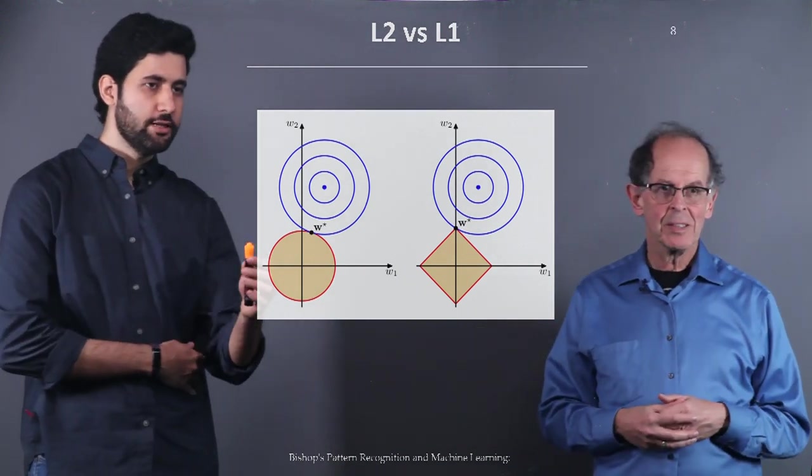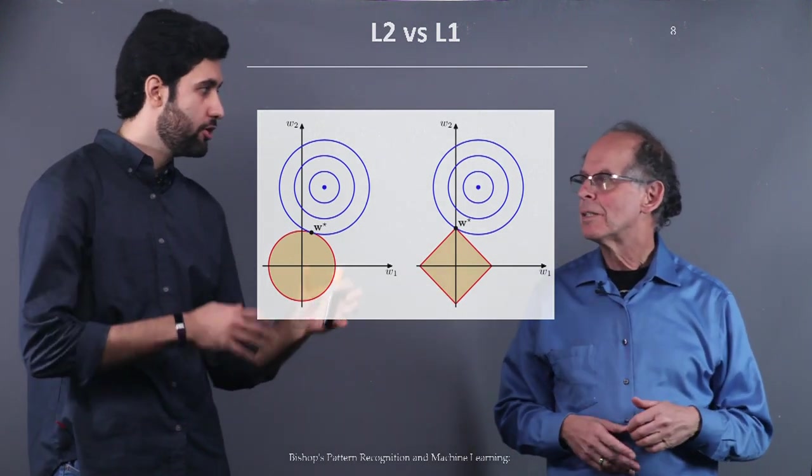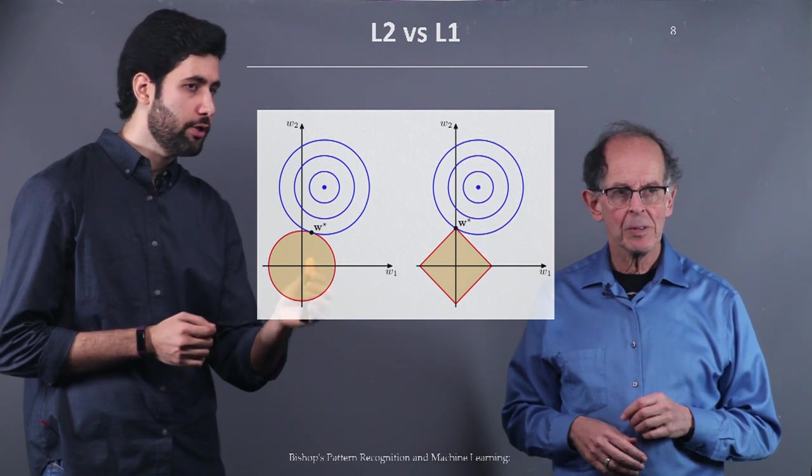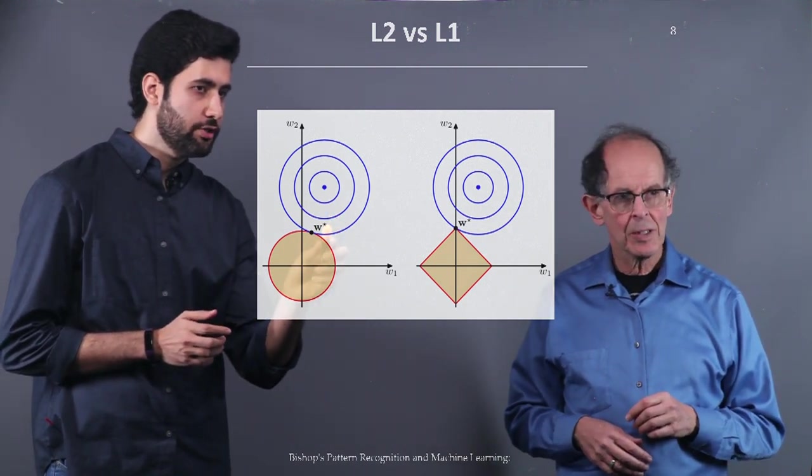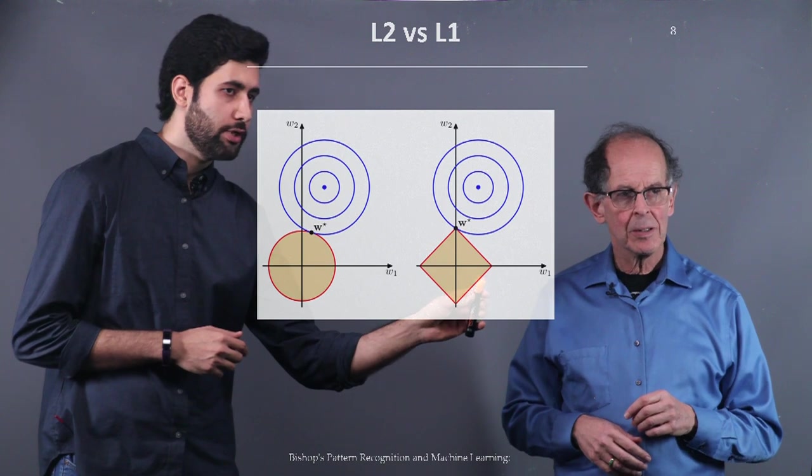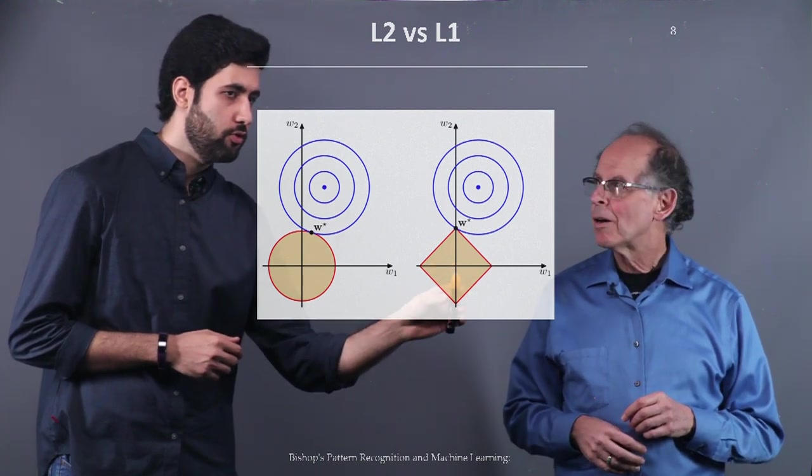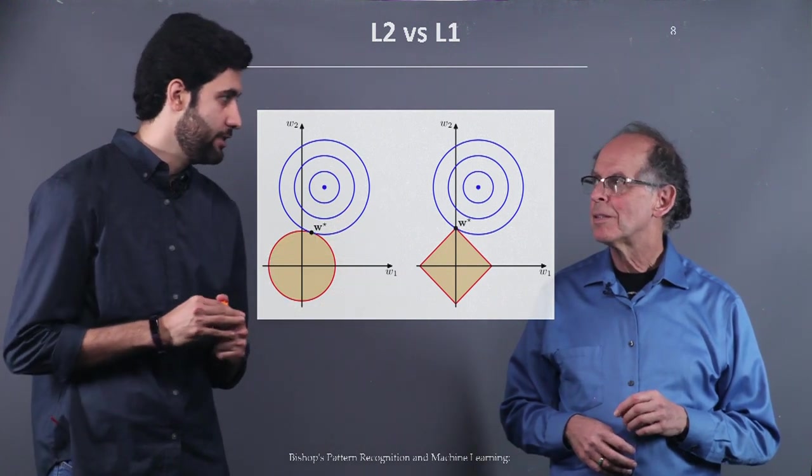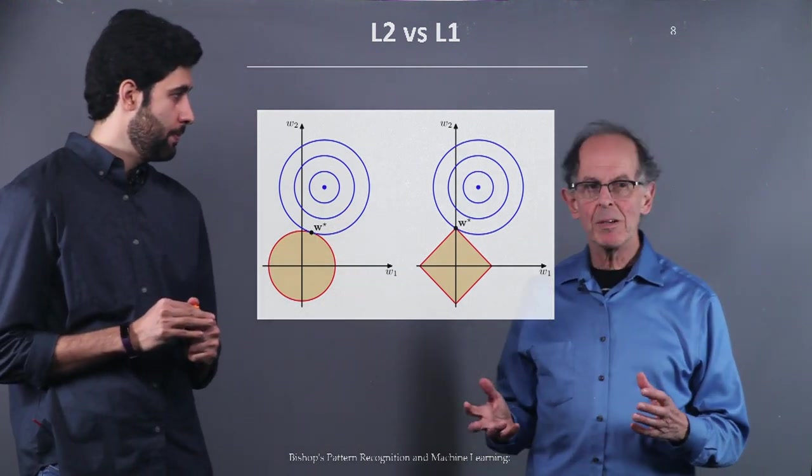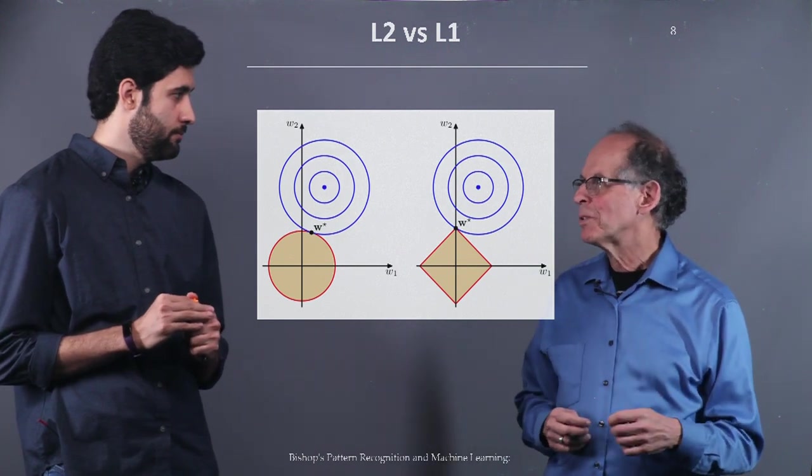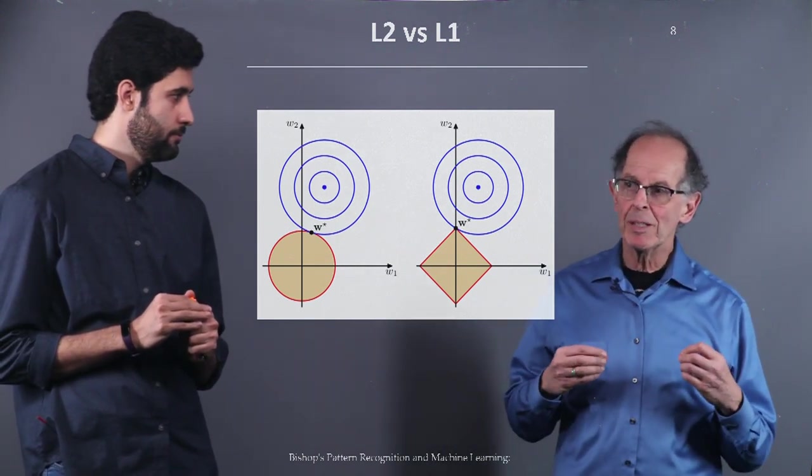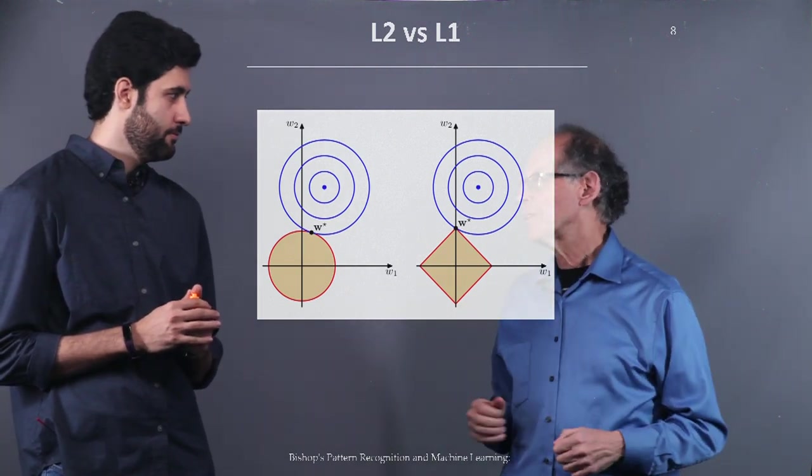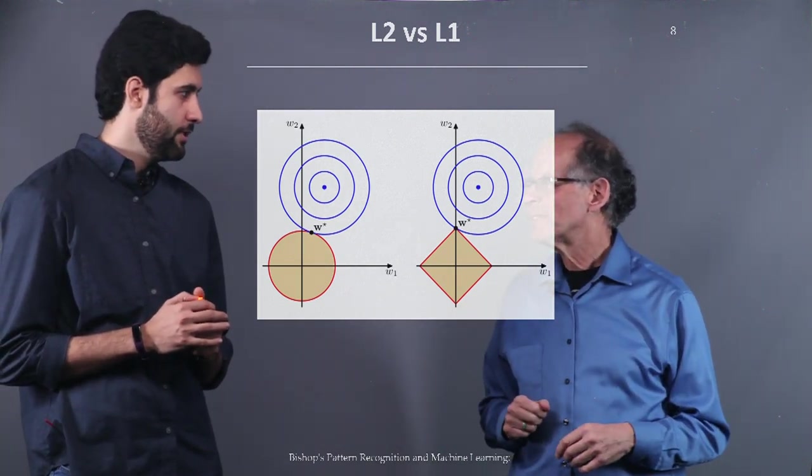So basically in both cases, W is small, we constrain the value of W, but here W has two components, and the intersection is here, but here W only has one component. So the other one is zero, which gives us a sparse representation of weights. So when we want that sparse representation, it's clear we're going to use W1, and when we want a smoother representation, we'll use W1 and W2 in L2.